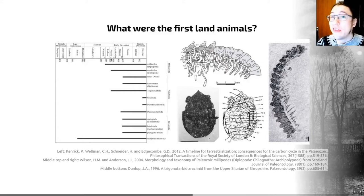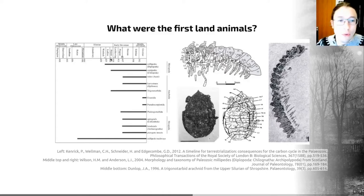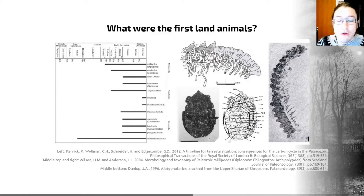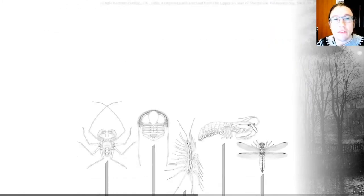We know that they were land-based predators. It's really interesting that the first arthropods we have on land were predators — they were definitely eating something, but we don't know what. They're quite derived arachnids, so the ancestors of all arachnids were probably on land for quite a bit earlier than the 419 million year old date on these rocks would have us believe.